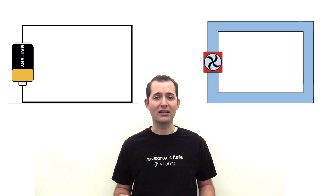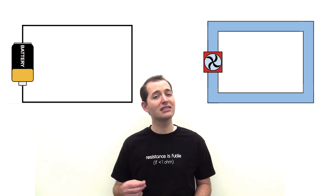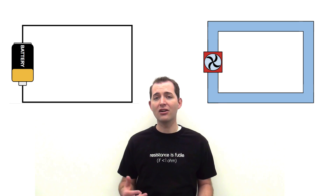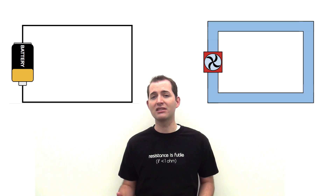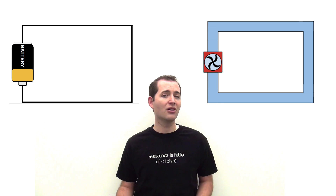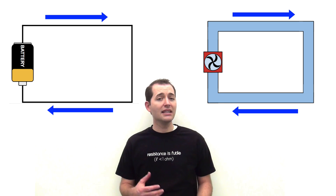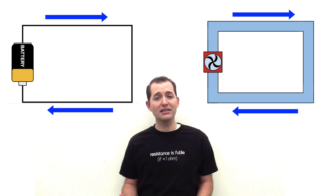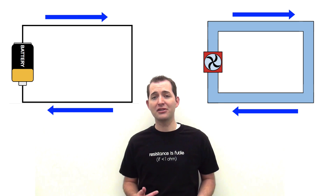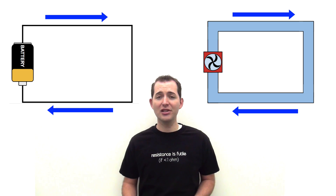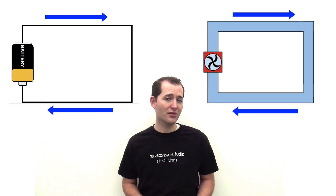In the case of the electrical circuit, we are talking about a direct current, which has a continuous flow, rather than an alternating current, which is more common in homes and buildings. In both the water system and the electrical circuit, something is continuously flowing through our system.